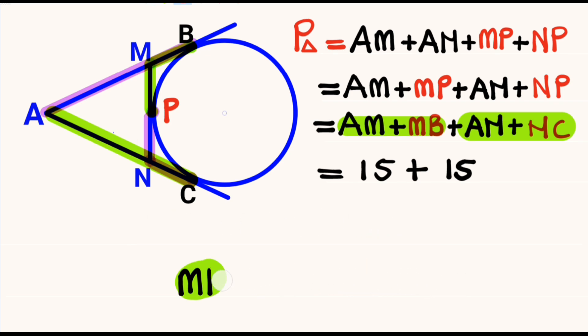So 15 plus 15 will be equal to 30. The perimeter of triangle AMN will be equal to 30 centimeters.